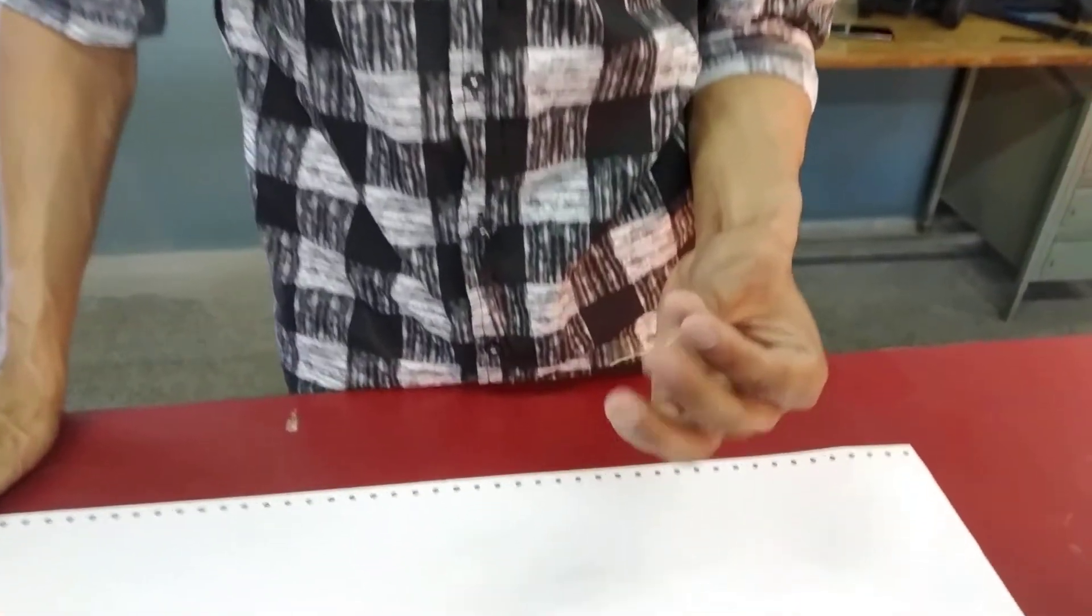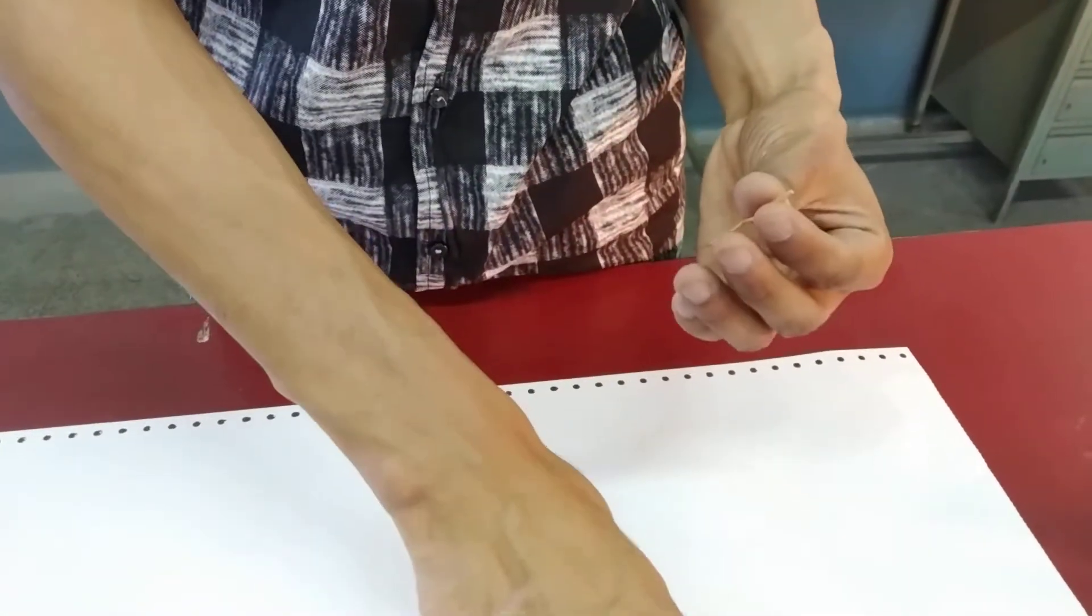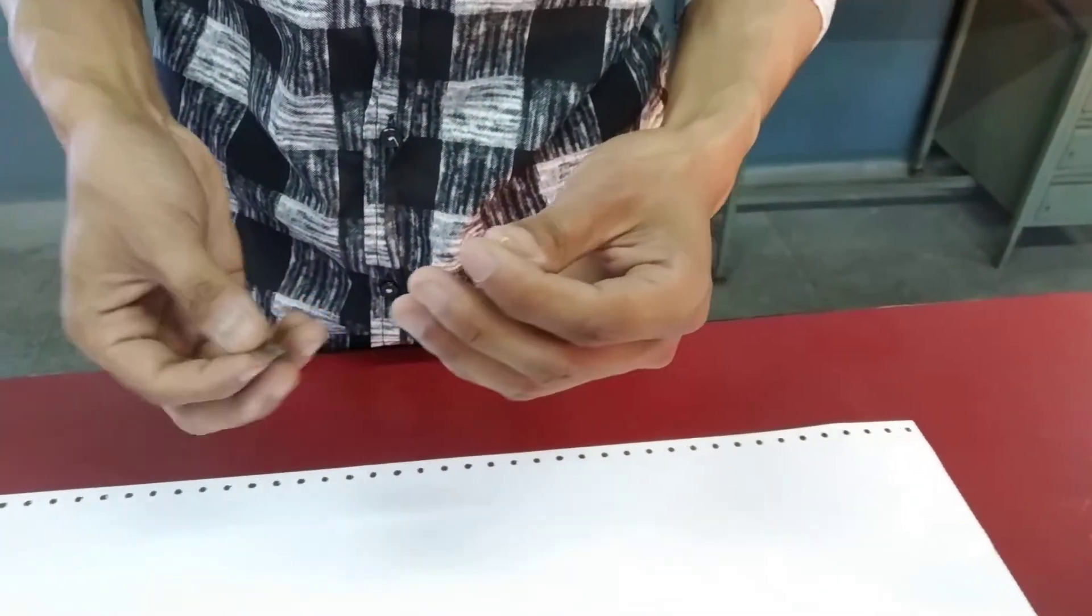Today we are going to make permanent slides of various specimens provided. The first specimen is a type of root. Select a specimen and cut thin sections.